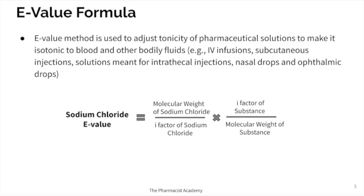To get the sodium chloride E value of a substance, you set up an equation using the molecular weight of sodium chloride and the molecular weight of that substance, along with the i-factor of each. The i-factor is simply the dissociation factor — for example, when you dissolve sodium chloride in a solution you get two ions, so the i-factor is two. This is something they usually don't ask you to calculate on the exam, so I won't focus too much time on it — they usually give you the E value of the substance.